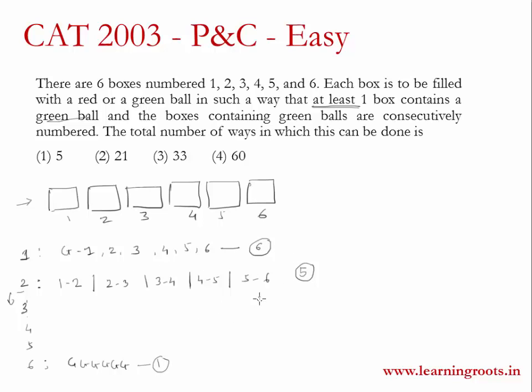For three green balls you have four possibilities, for four you have three possibilities, for five you have two possibilities, and for six green balls you have one possibility.